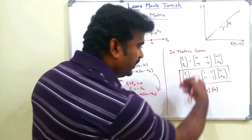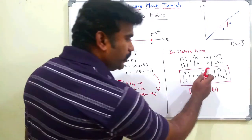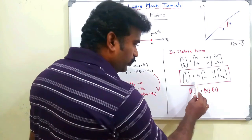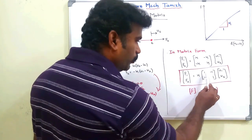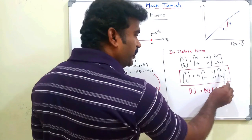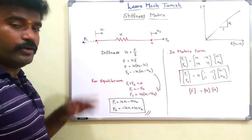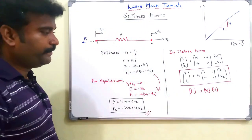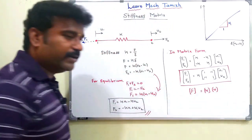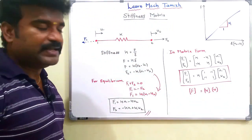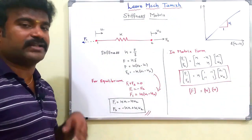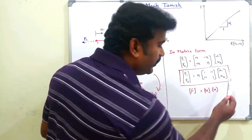If we factor out K, we get the values 1, minus 1, minus 1, 1. So F1, F2 equals K times the matrix [1, -1; -1, 1] into U1, U2 — or equivalently [K, -K; -K, K] into [U1, U2]. K is the stiffness matrix and U is the displacement field variable matrix. We apply the boundary conditions and unknown values.